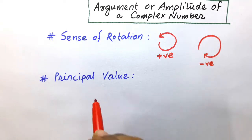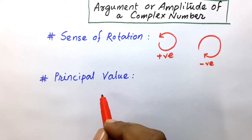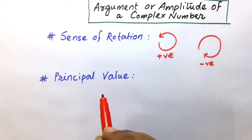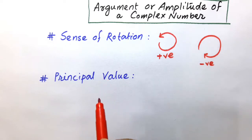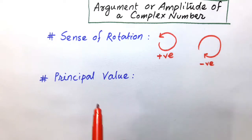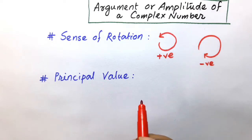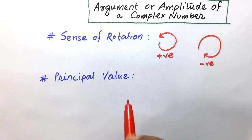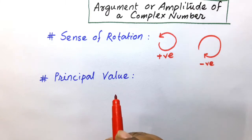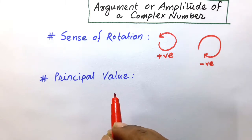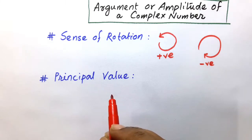Now we shall study the principal value form. If the value of inclination lies between minus pi to plus pi, then the value of inclination is called the principal value form.